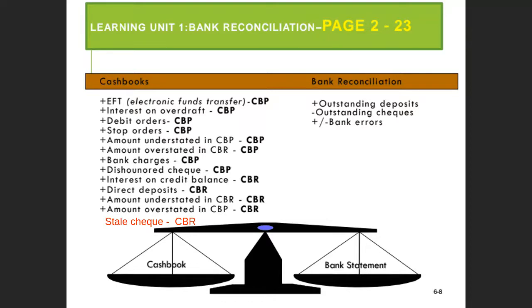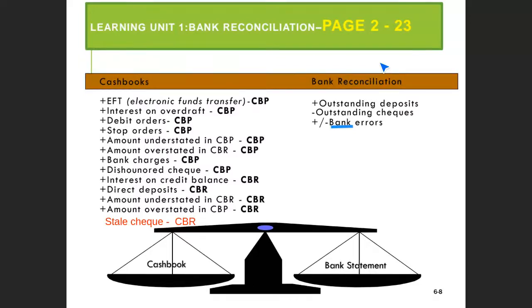The stale check will go to our cashbooks. Remember — there are things which appear in our cashbook but not on the bank statement; we record those in what we call the bank reconciliation statement. That's where we put outstanding deposits, outstanding checks, and errors made specifically by the bank. If the error was not made by the bank, we record in the cashbooks because the error was made by us as a business. But if the error was made by the bank, we record it under the bank reconciliation statement.